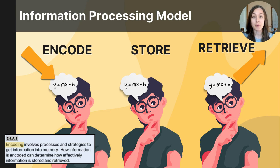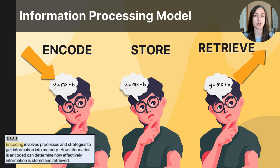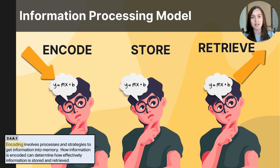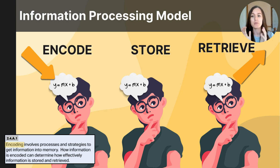As you learned in the first video about memory, cognitive psychologists use memory models to try to explain how memory works — they're like frameworks to help us conceptualize our memory. One of the most common ways psychologists conceptualize memory is through a computer-like model called the information processing model. It's really important to know our memory is not like a computer; computers save information exactly how it was put in and retrieve it exactly how it was left, but our memory can be influenced and distorted by all kinds of factors. The information processing model just helps us better understand the steps of memory going in, staying, and being taken out.